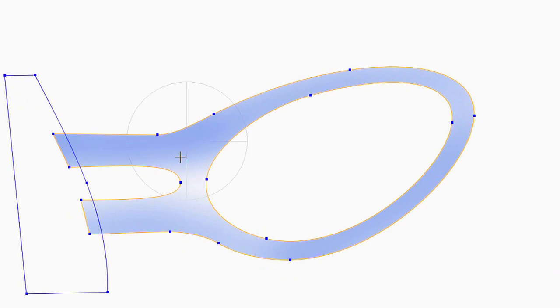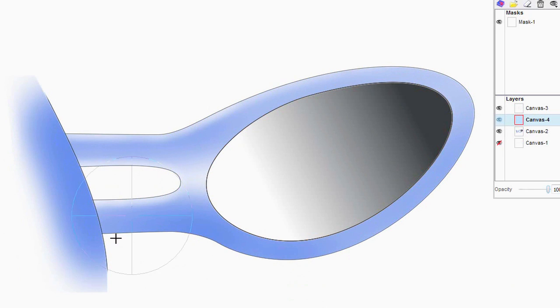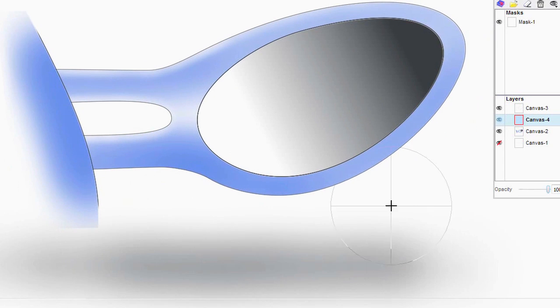Creo Sketch also includes traditional 2D sketching tools such as lines, splines, and circles. These can then be used along with the brushes to trace along.